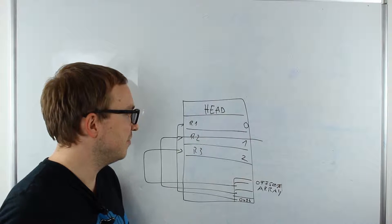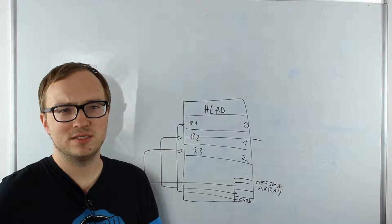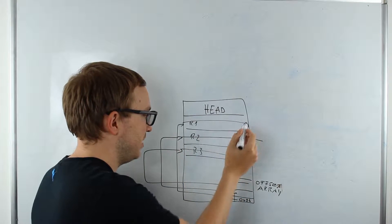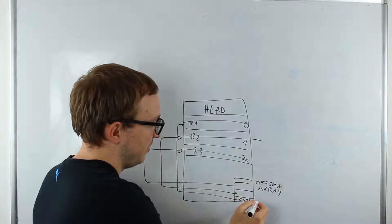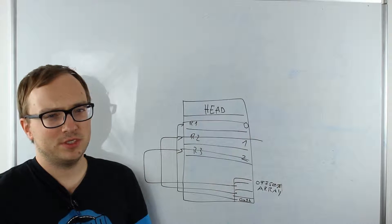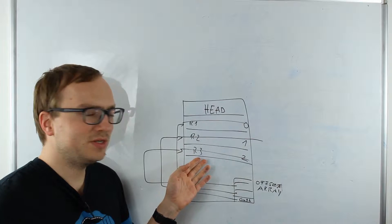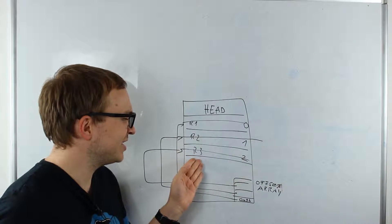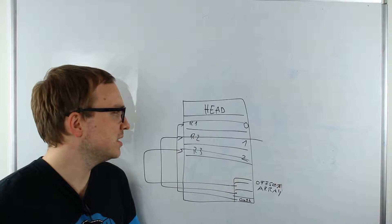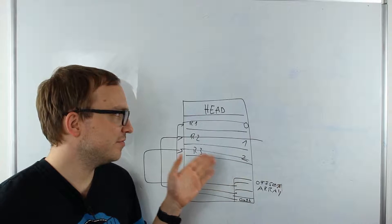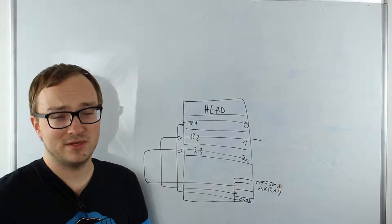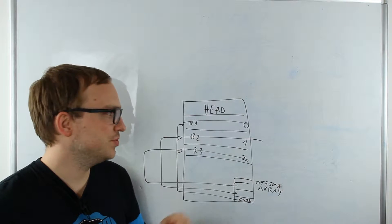If the offset array does not change, that means the positions of subsequent rows did not change, and the space that slot 1 took is not actually free — it's still there, still allocated. When you delete rows from a heap, the space stays allocated until you rebuild the whole table. Even if you delete all rows on a page, the page will still be allocated and assigned to the heap's responsibility.